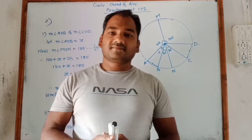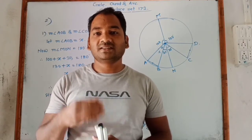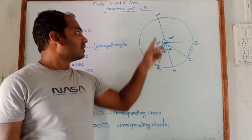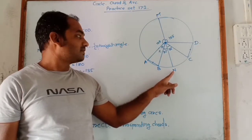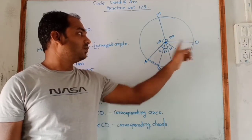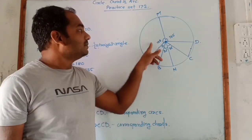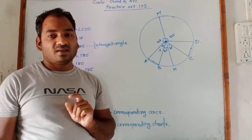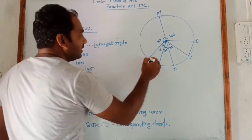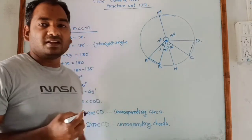Now look at the second question of practice set 17.2, which is also the last question of this chapter and your syllabus. In this question, MN is a diameter and radii AO, BO, CO, DO are given. We are given some measures of central angles, and we have to find the measure of angle AOB and angle COB.